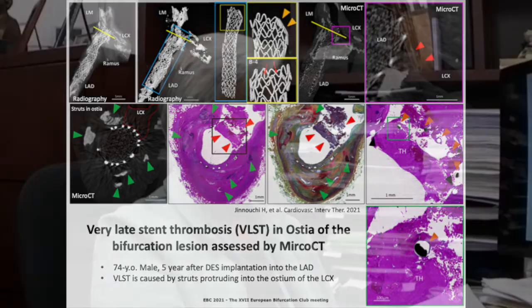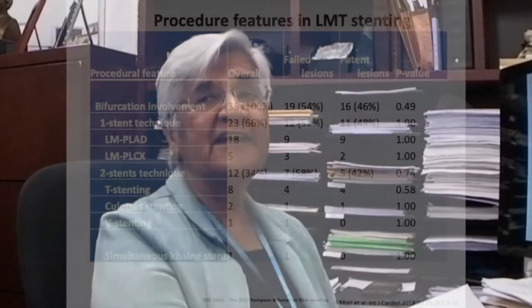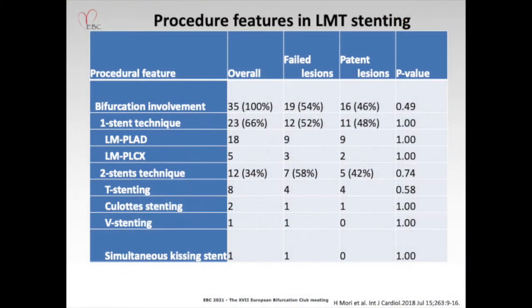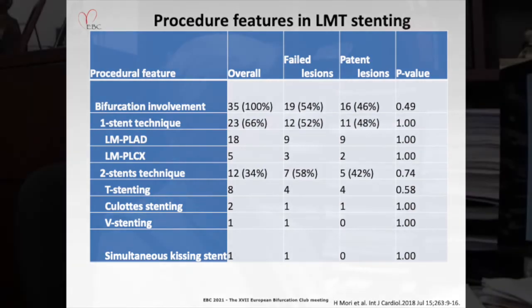I've put together features of left main stenting at the bifurcation. In a paper we wrote some time ago, we had a total of 35 stents deployed at the bifurcation. Stents that failed were 54% compared to patent stents which were 46%. I'm going to show you the various techniques used and the underlying causes of thrombosis in each.